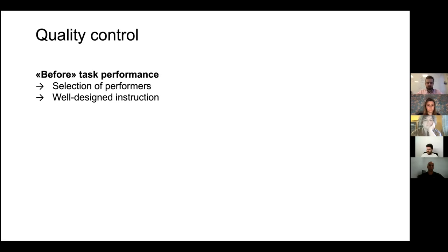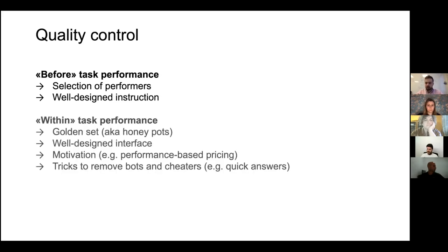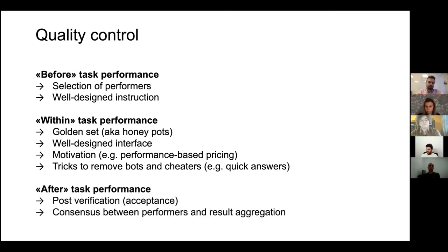The important thing for motivating performers is price depending on quality. Quality control can also be done after the task is done — for example, verifying it or aggregating results. When you have some different projects and the correctness of answers in one depends on another project, you can apply post-verification accordingly.